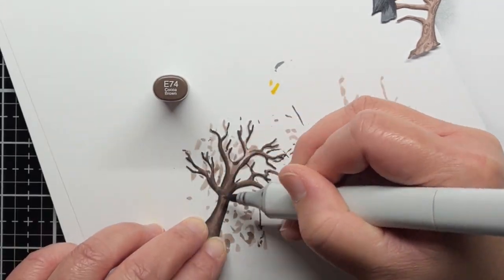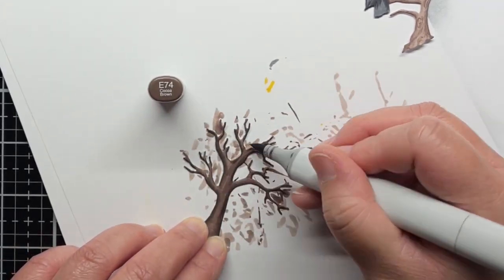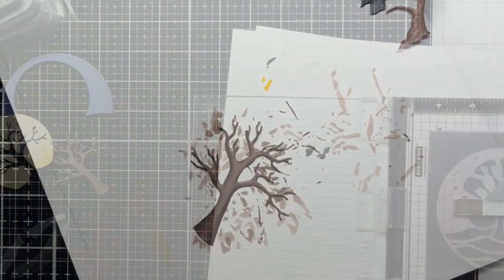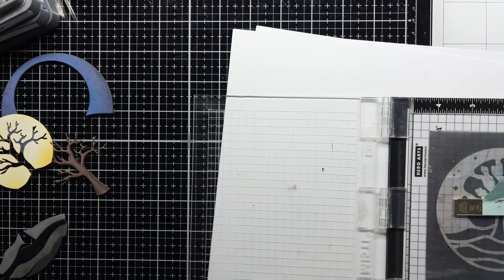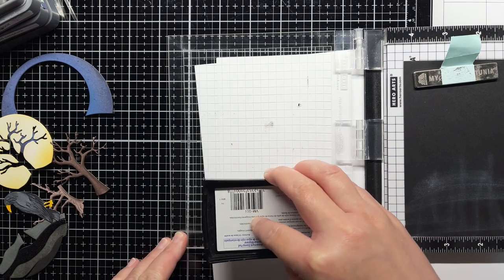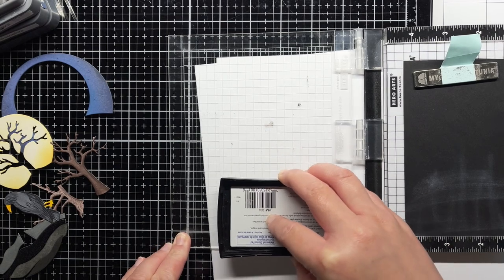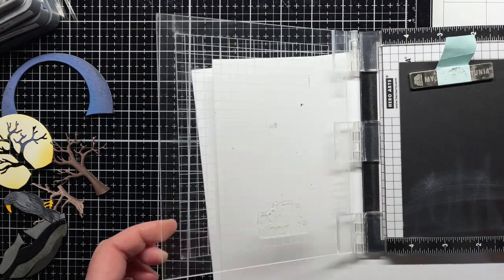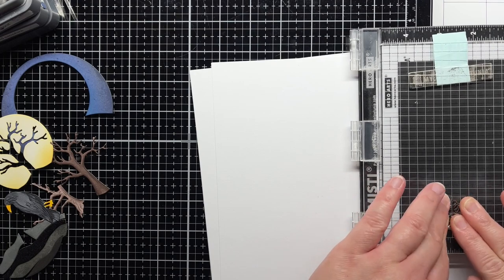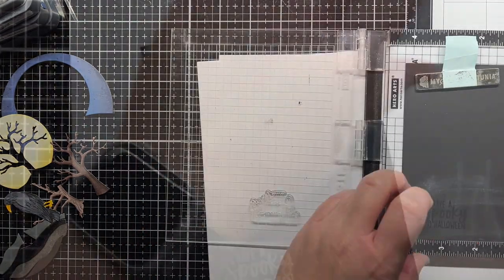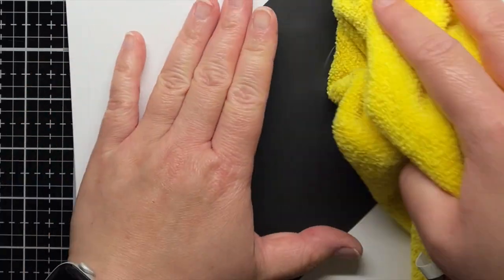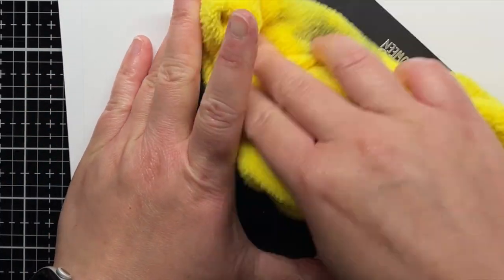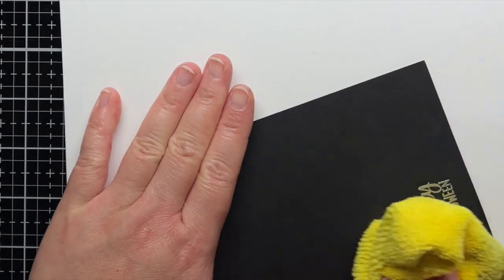Once I'm done coloring and blending, I set all those pieces aside while I work on the rest of the card. I stamp and heat emboss a sentiment from Hocus Pocus onto the bottom of an A2 panel of black cardstock. I use an anti-static powder tool before embossing to make sure I won't have any stray embossing powder, and then I rub off the excess powder with a dry microfiber cloth once I'm finished embossing.